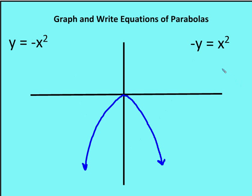I can also write my equation as y is equal to negative x squared, or negative y is equal to x squared. That's going to be an unhappy parabola — if I have a negative sign, I have an unhappy parabola that faces down. The parent function has a vertex at the origin, and the axis of symmetry is still the y-axis. So y equals negative x squared, or negative y equals x squared, gives me a parabola that faces down.